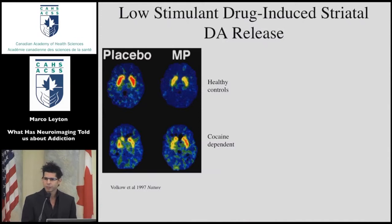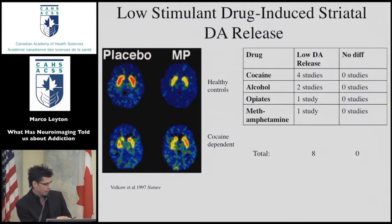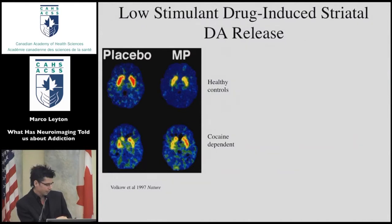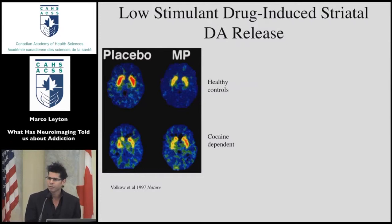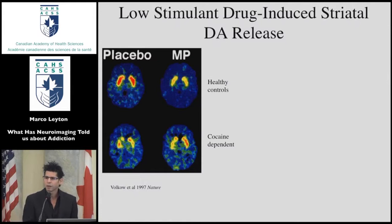The second important finding from that 1997 study: when participants were challenged with a surreptitious intravenous injection of methylphenidate — none of the usual cues were available — in healthy controls there was a clear change in the raclopride signal from the placebo to the drug test session, providing an index of increased dopamine release within the striatum. In the cocaine-dependent subjects, they had lower baseline levels of tracer binding, and almost no change whatsoever following this surreptitious administration of methylphenidate.